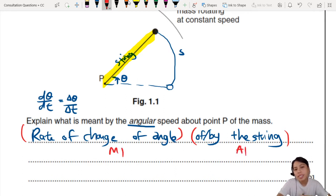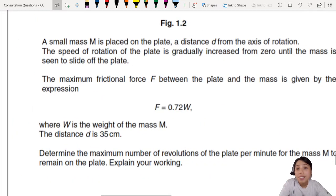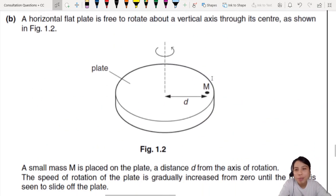Rate of change of what angle? Where's the angle? You must say the angle because of this string. This string is changing its angle, rotating about the center. So you say by the string. A lot of people miss out the second part. Rate of change of angle is the first mark M1, this is A1.